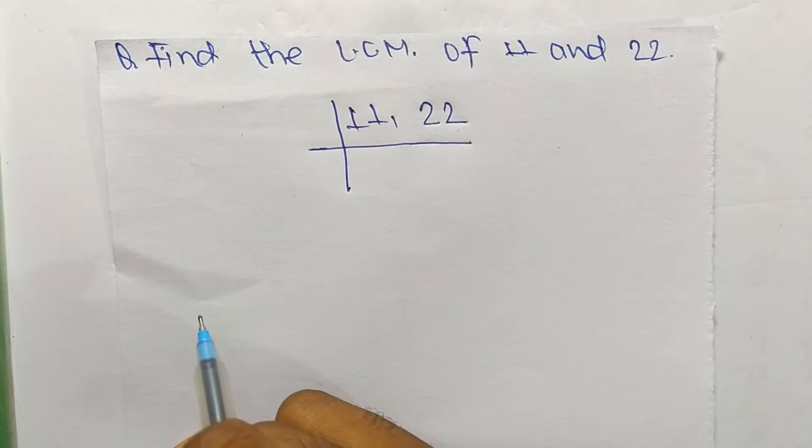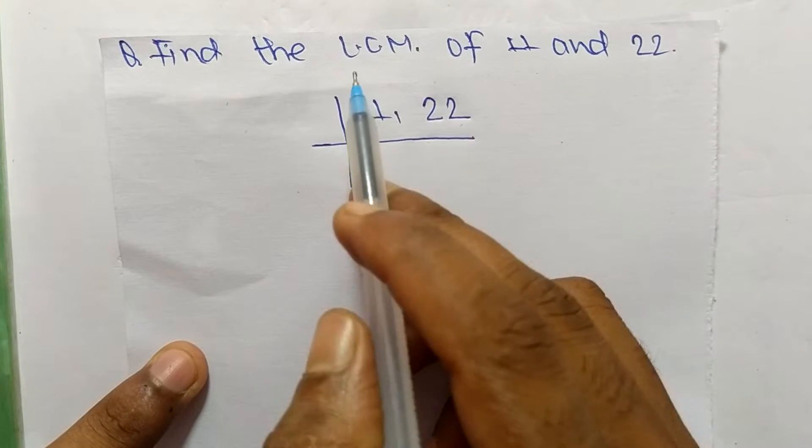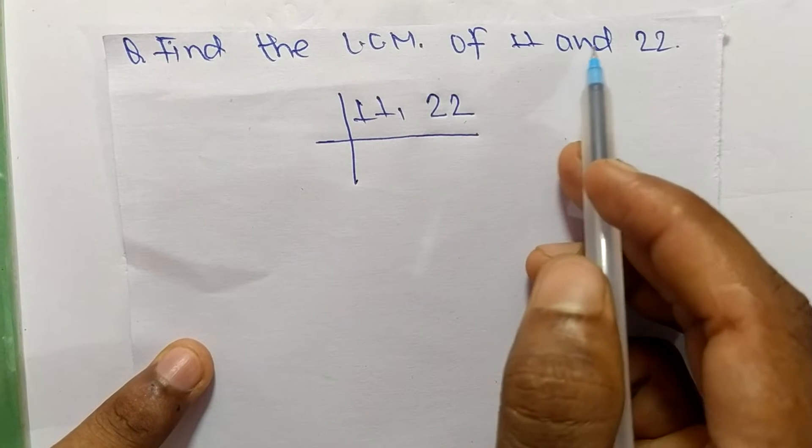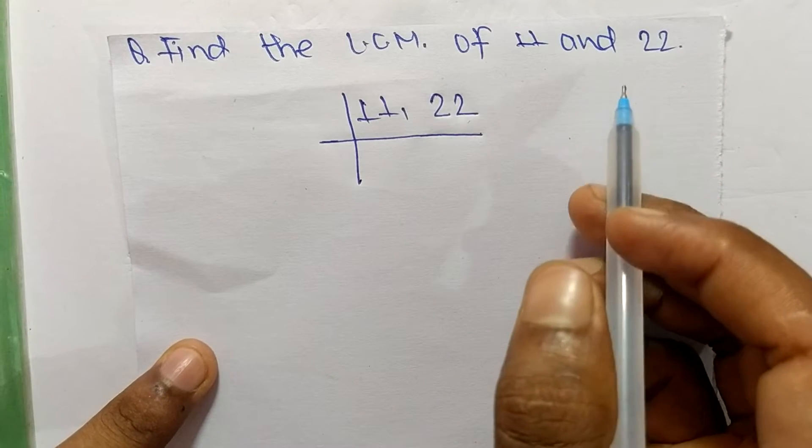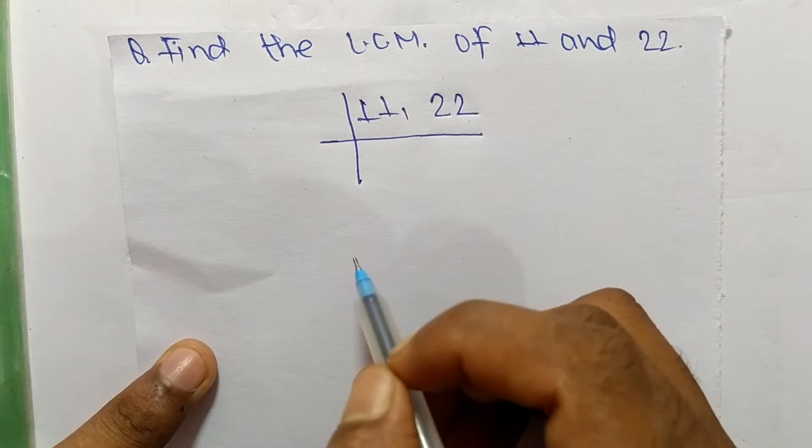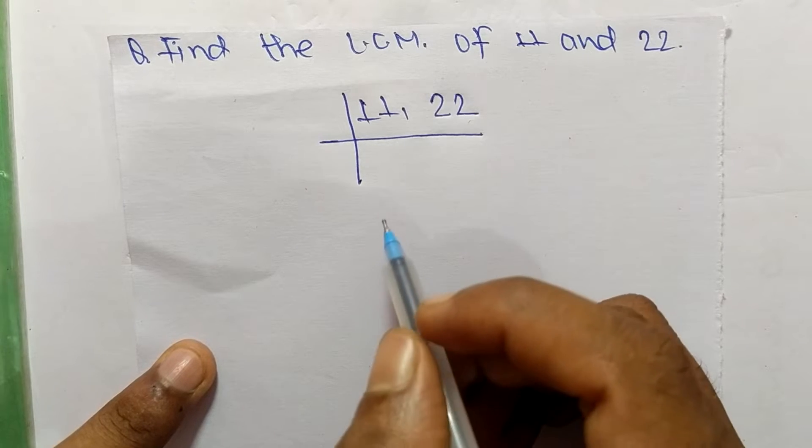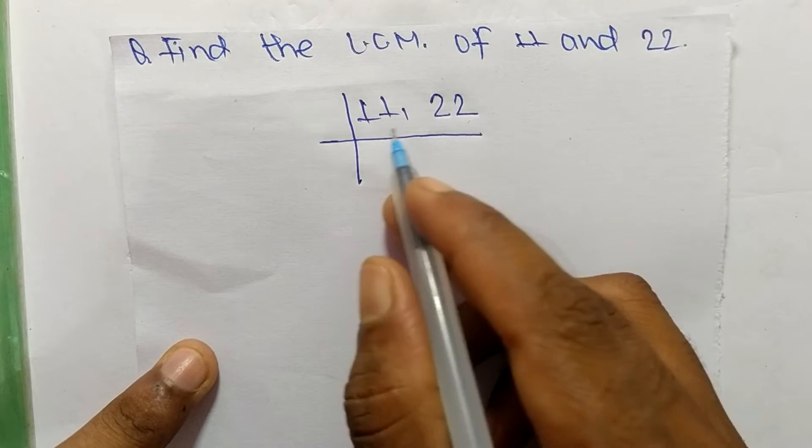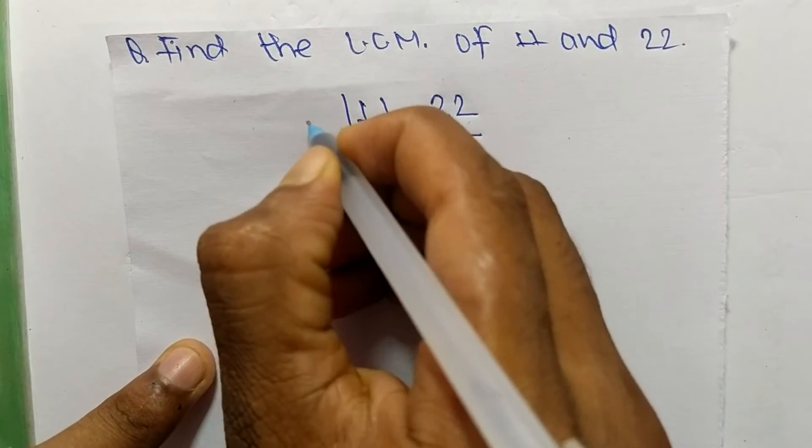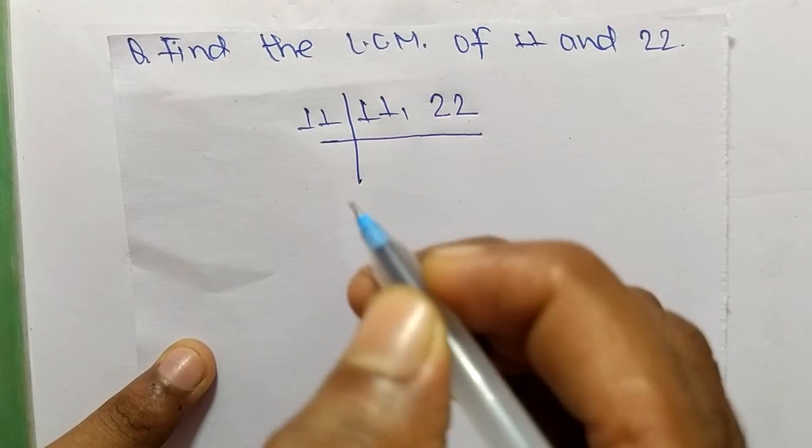So today in this video we shall learn to find the LCM of 11 and 22. To find LCM, first we choose the lowest number which can exactly divide 11 and 22. So the number is 11.